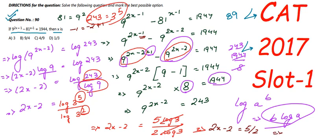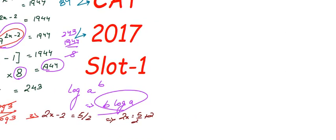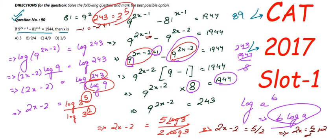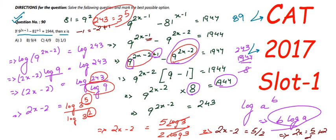Therefore 2x equals 5/2 plus 2, which equals (5+4)/2 equals 9/2. So x equals 9/2 times 1/2, which equals 9/4. Our value of x is 9/4. Checking the options, option B matches our answer, so option B is the correct answer to question 90.